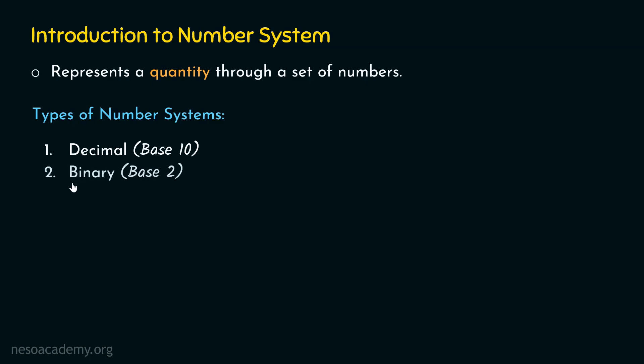The second number system is the binary number system, where the base is 2, which means that each digit of a binary number can lie in the range from 0 to 1 — only two allowable digits, 0 and 1. The third number system is the octal number system, where the base is 8, which means that each digit of an octal number can lie in the range from 0 to 7.